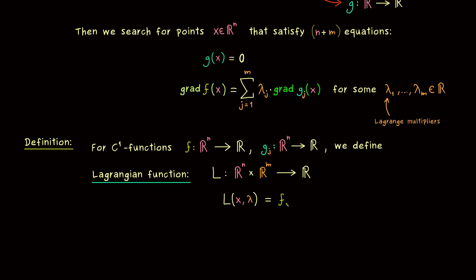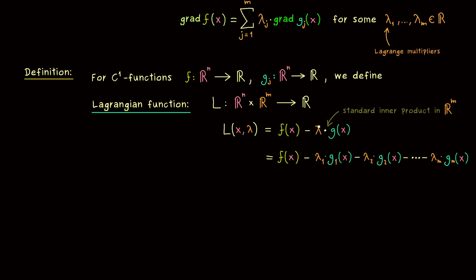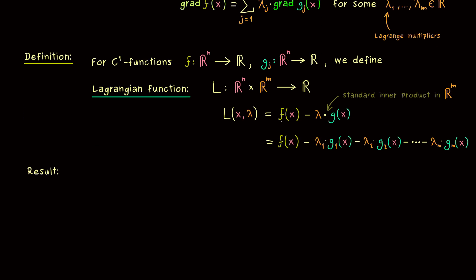It's given by the function f minus a combination of lambda with the function g. The common way to write this is lambda times g, where the dot denotes the standard inner product in ℝᵐ. This represents a sum with m entries. As a reminder, we have the coefficient λ₁ times the function g₁, then λ₂ times g₂, and this continues until we have λₘ times gₘ. It's much easier to write this down with the standard inner product, the vector lambda, and the whole function g.